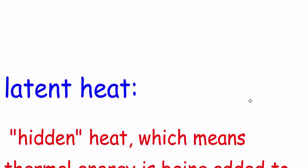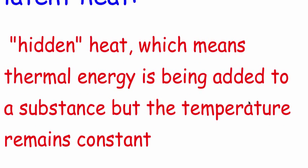So there's something going on there. There's something called latent heat. Latent, which means hidden heat, is essentially thermal energy being added into a substance, but the temperature remains constant. You've got your pot of water on the stove. You're trying to make Kraft dinner. It's cranked up. It's boiling like crazy. But if you were to put a thermometer in, it would only say 100 degrees.